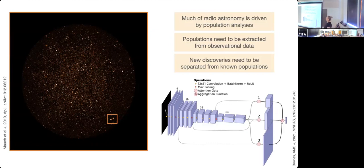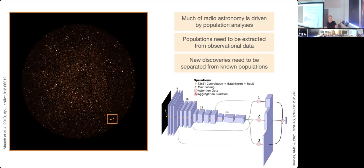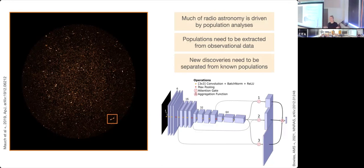Some of the main drivers are population analyses. The science we do these days is not object by object — it's based on analyses of large populations. The SKA and its precursors will be doing large surveys providing these populations, so we need to extract particular types of objects from surveys containing hundreds of thousands to millions of sources. But moreover, we need to know what are the things in those surveys we haven't seen before. Where is the discovery space? When we automate these processes, we need to be very careful not to automate out this potential for discovery.